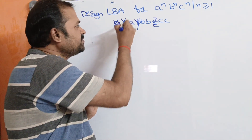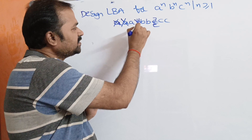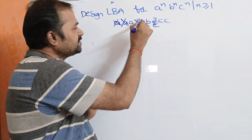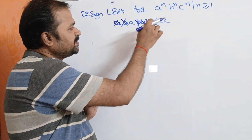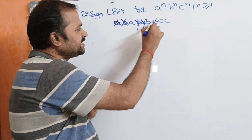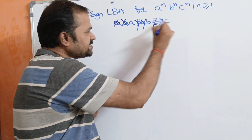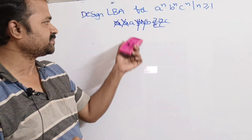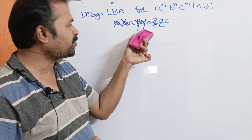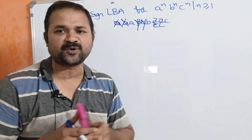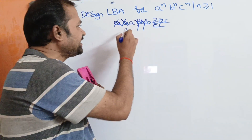The second A will be replaced by X and move right till we get Y. After Y, we have B. So replace this B by Y. Next, move right till we get Z. After Z, we have C. So replace this C by Z. This is the second X, the corresponding Y, and the corresponding Z. Then move towards the left till we get A.